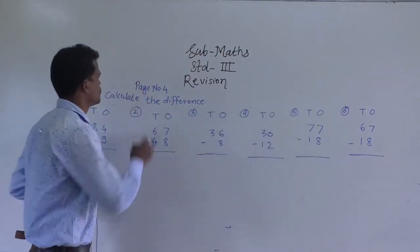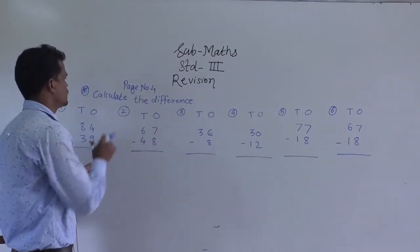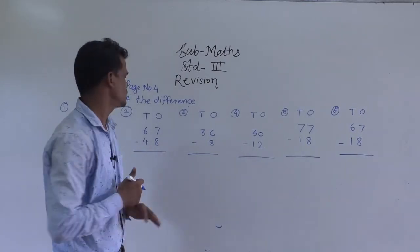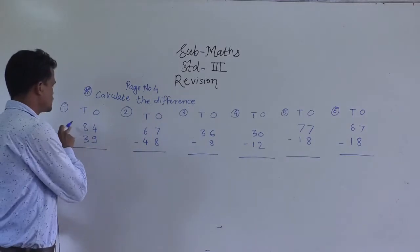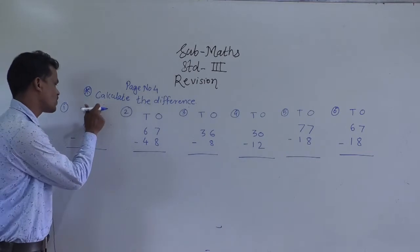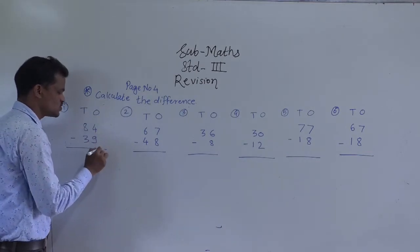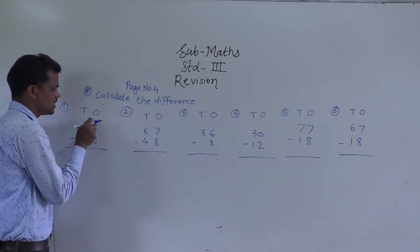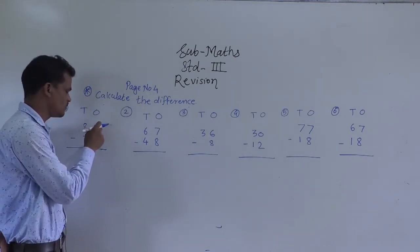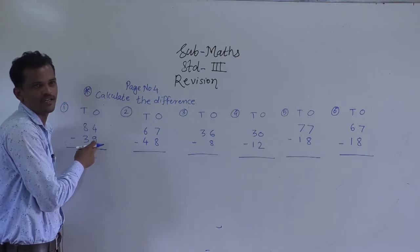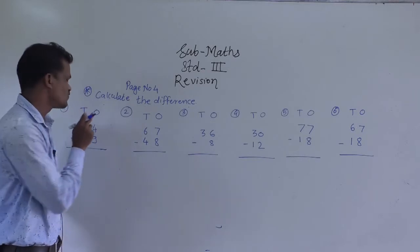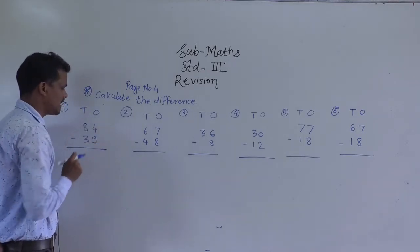Next, page number 4 — calculate the difference, means here we have to do subtraction. First example: 84 minus 39. Start from the ones place to subtract. Here, 4 minus 9 — you can observe 4 is the smaller number and 9 is the bigger number, so we cannot subtract 9 from 4.